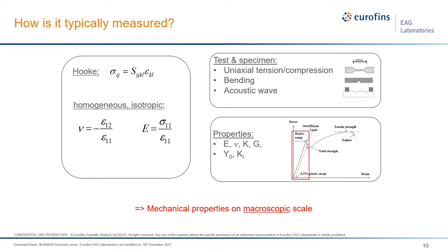Once we have these two constants, we can design simple experiments. For example, we can make tensile dog-bone samples with uniform stress to directly relate to elasticity. We can also do bending testing, give a notch for brittle property measurement, or do elastic measurements using acoustic wave propagation. This allows us to determine properties like Young's modulus, Poisson's ratio, compression modulus, shear modulus, yield stress, and fracture toughness — many properties along the stress-strain curve. These are well established at the macroscopic scale.